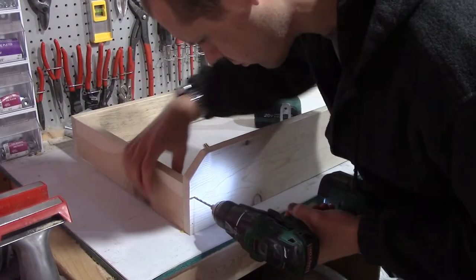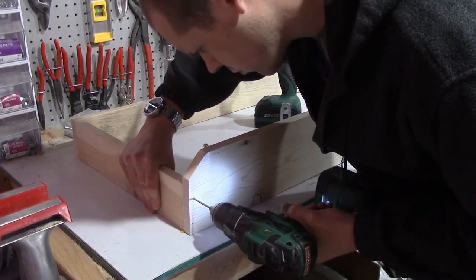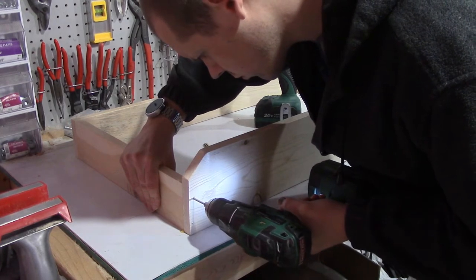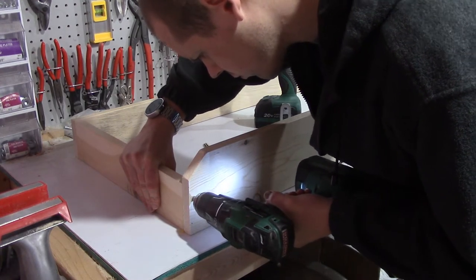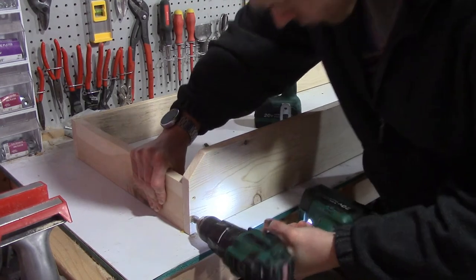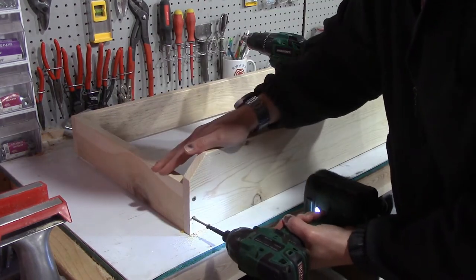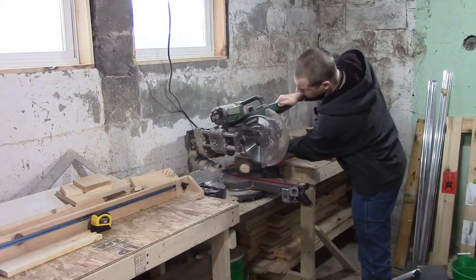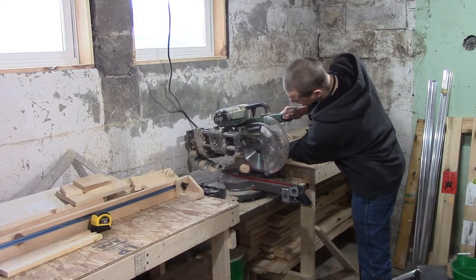Once the glue had dried, I went back and added screws for extra strength and stability. To give the shelf a bit of a rustic look, I decided to use some small logs for the two central divider-supporter things.